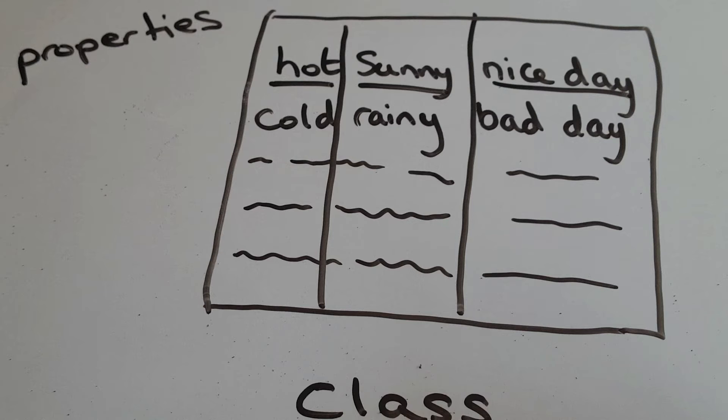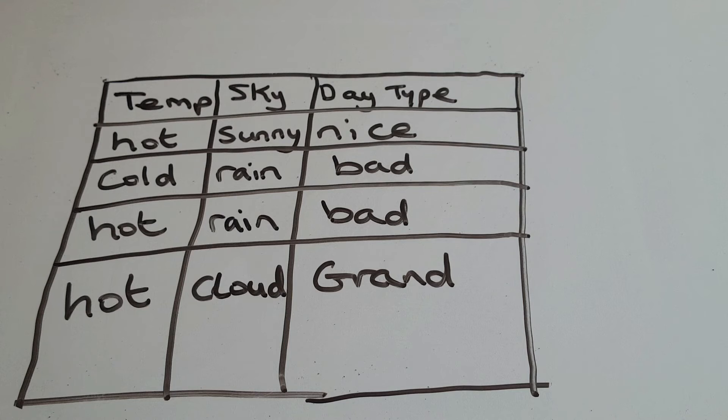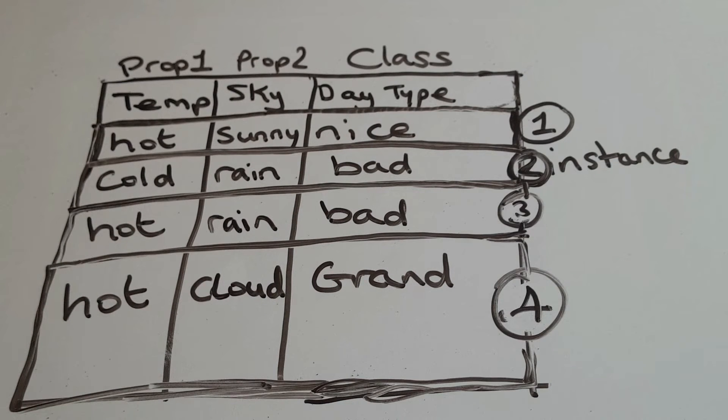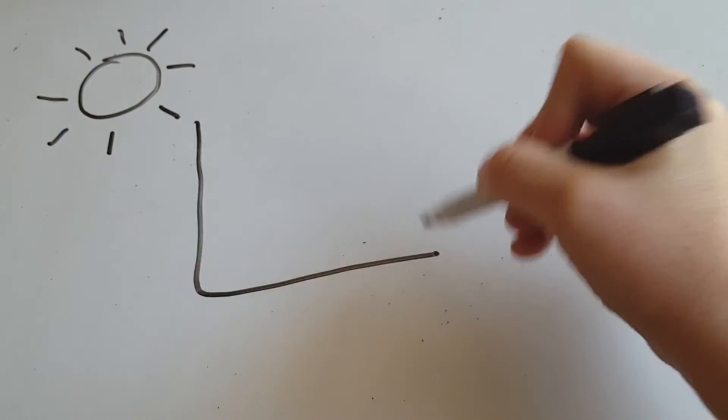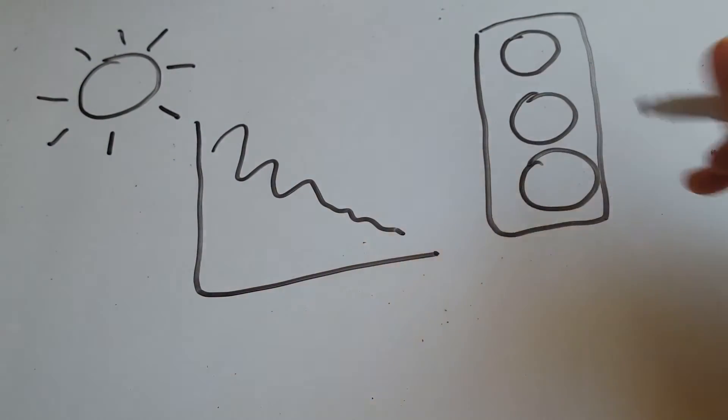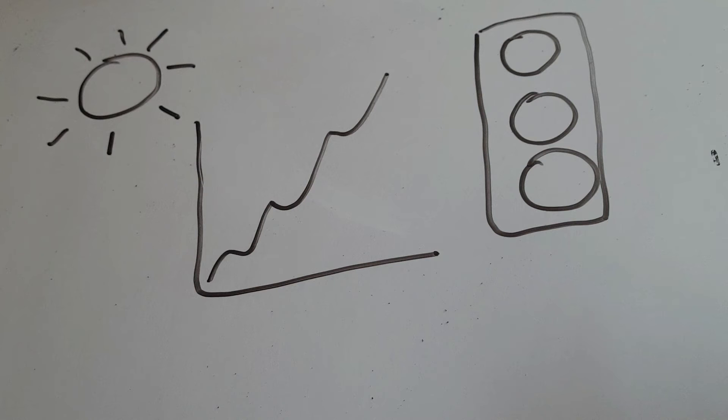So let's do a language check and say our data set is a collection of instances and each instance is made up of properties and a class and just like there are many different types of days based off these properties there might be many types of classes too. People can make data sets about anything like the weather, stock market, infrastructure and using past experiences we can make better decisions in the future.